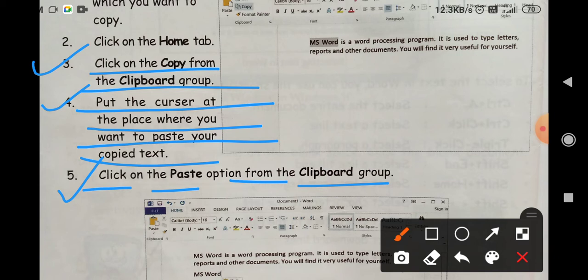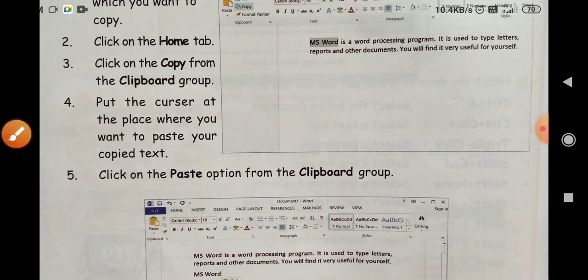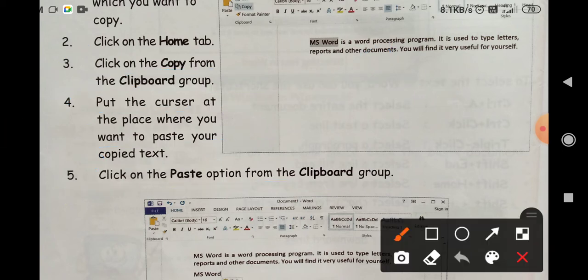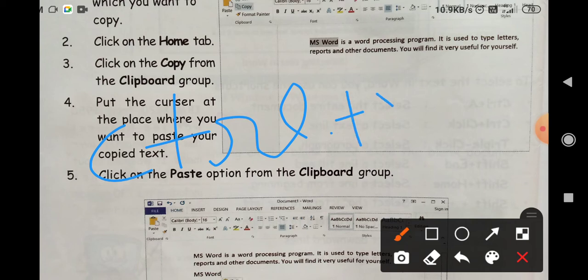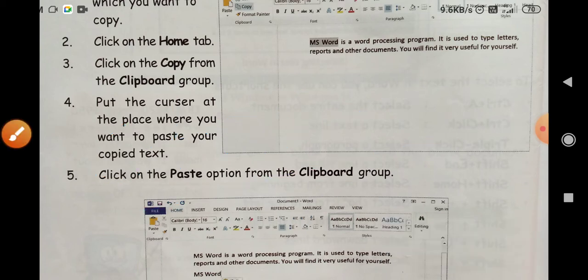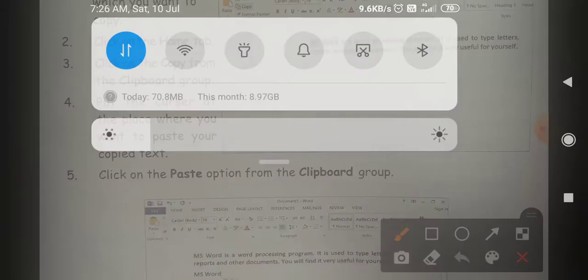Shortcut keys: Control C to copy, Control V to paste. If you press Control C, then copy will happen. If you press Control V, then that text will be pasted.